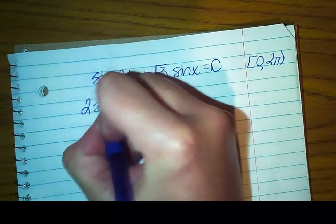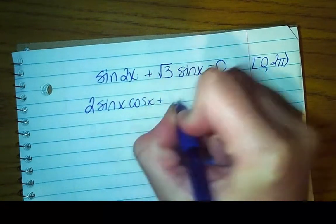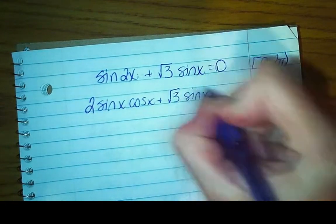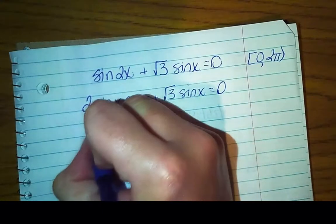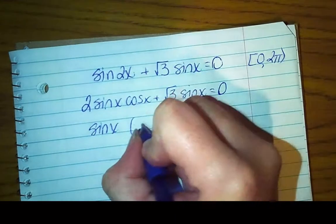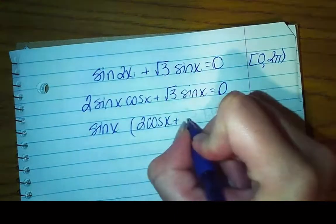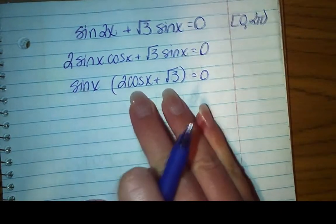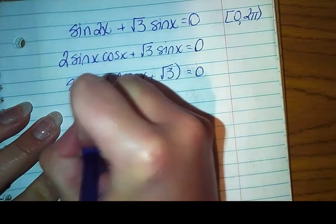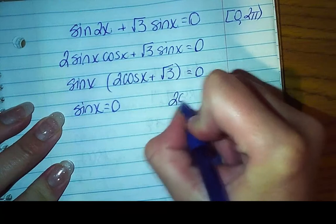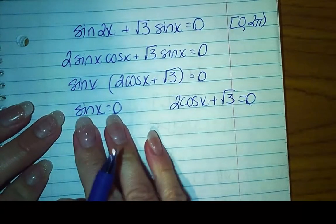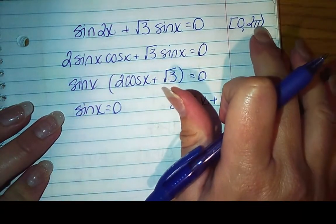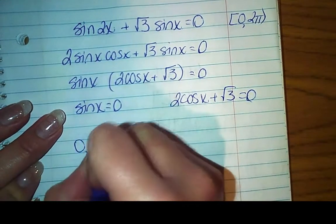So I'm going to use a double angle formula to knock this down so that my arguments are all the same. So this becomes 2sin(x)cos(x) + √3 sin(x) equals 0. And now both terms, all the arguments match, so I can pull out a sine. And that leaves me with 2cos(x) + √3 equals 0. So now this can be 0, or this can be 0. So sin(x) can be 0, or 2cos(x) + √3 can be 0. Well, where does sine equal 0 on one lap of the unit circle? Not inclusive of 2π. That's going to be at 0 and at π.